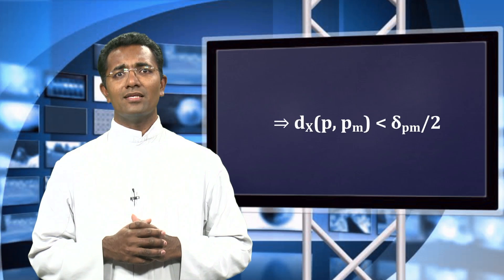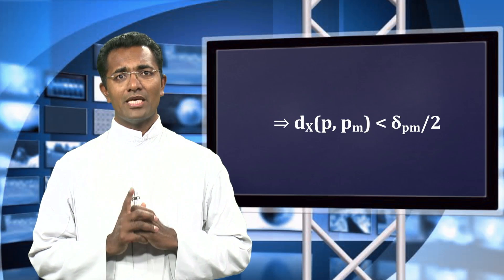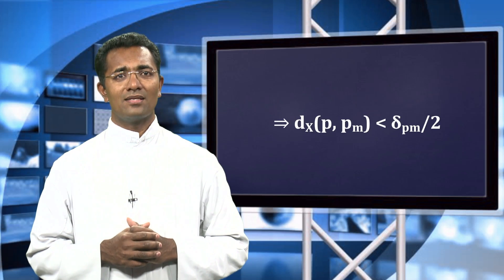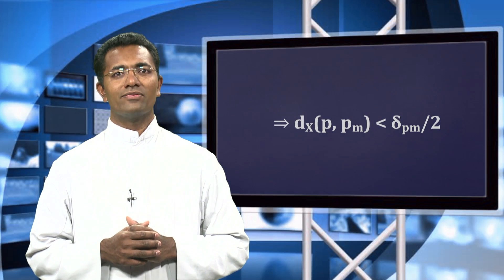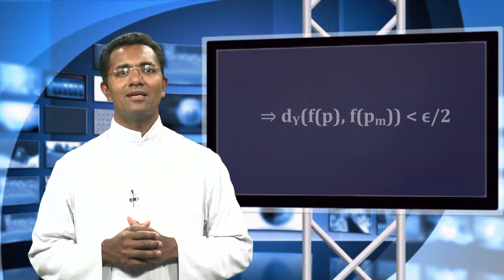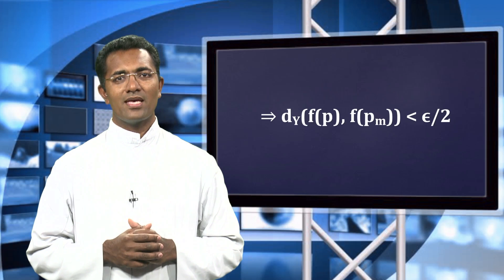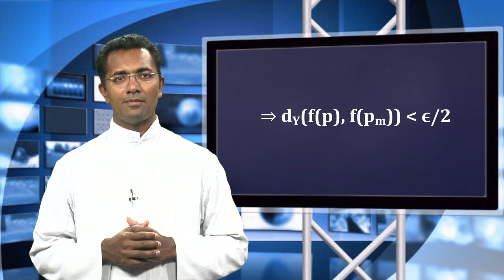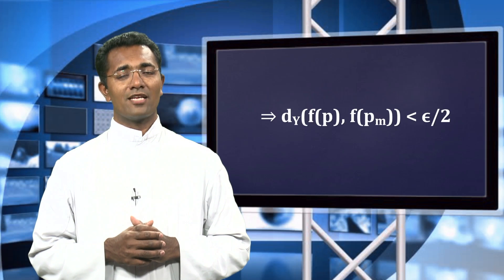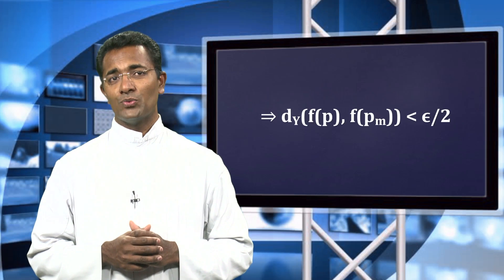But since f is continuous, by equation number 1, we have that the distance between f(p) and f(p_m) is less than epsilon over 2.